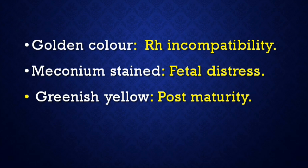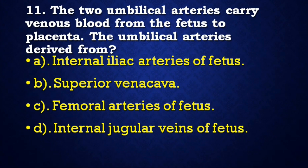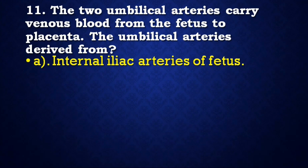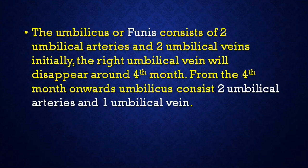Next question: The two umbilical arteries carry venous blood from the fetus to the placenta. The umbilical arteries are derived from — internal iliac arteries of fetus, superior vena cava, femoral arteries of fetus, or internal jugular veins? Correct answer is internal iliac arteries of fetus. The umbilicus consists of two umbilical arteries and two umbilical veins initially; the right umbilical vein disappears around the fourth month, leaving two umbilical arteries and one umbilical vein.